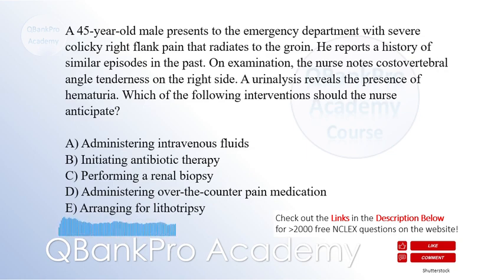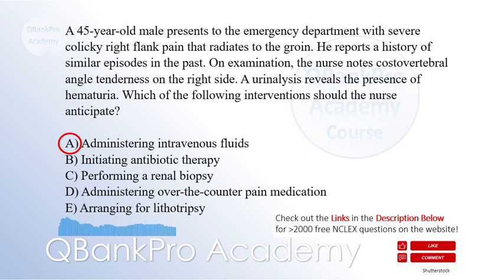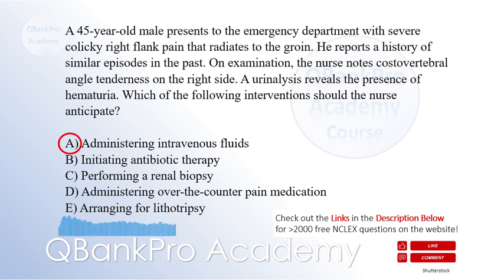The correct answer is A. Administering intravenous fluids. Explanation: The patient's symptoms, including severe colicky flank pain, radiating pain to the groin, costovertebral angle tenderness, and hematuria, are indicative of a kidney stone, renal calculus. The priority intervention is to administer intravenous fluids to promote hydration and increase urine output, which can aid in the passage of the stone.